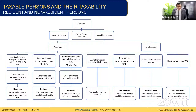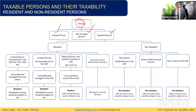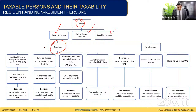This is a very important slide covering taxable persons and their taxability, along with resident and non-resident persons. Persons can be exempt, out of scope, or taxable. Taxable persons are classified into resident and non-resident taxable persons. Resident status here means residency from a tax point of view, not where people physically live.